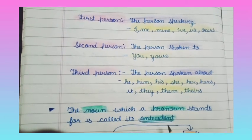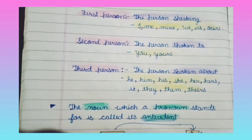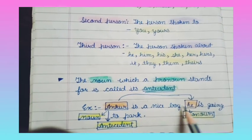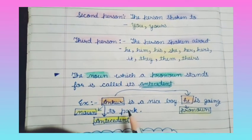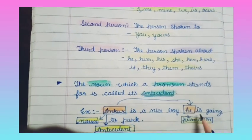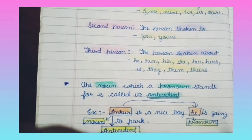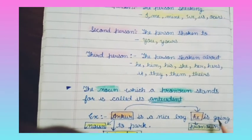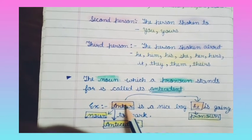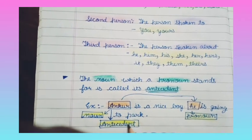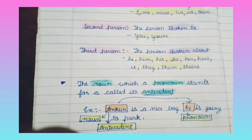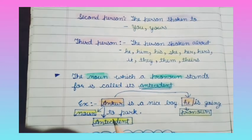The noun which a pronoun stands for is called its antecedent. For example: 'Ankur is a nice boy. He is going to the park.' Here, Ankur is a noun and 'he' is a pronoun used for Ankur — so Ankur is the antecedent of 'he'.